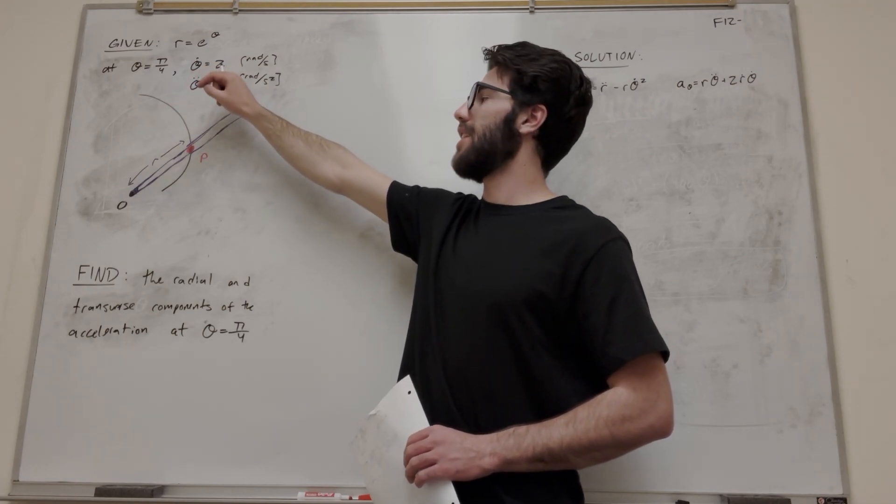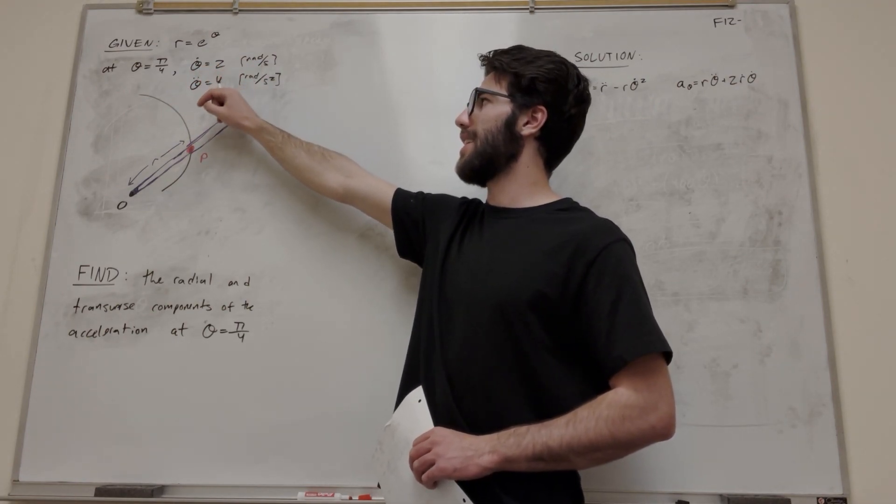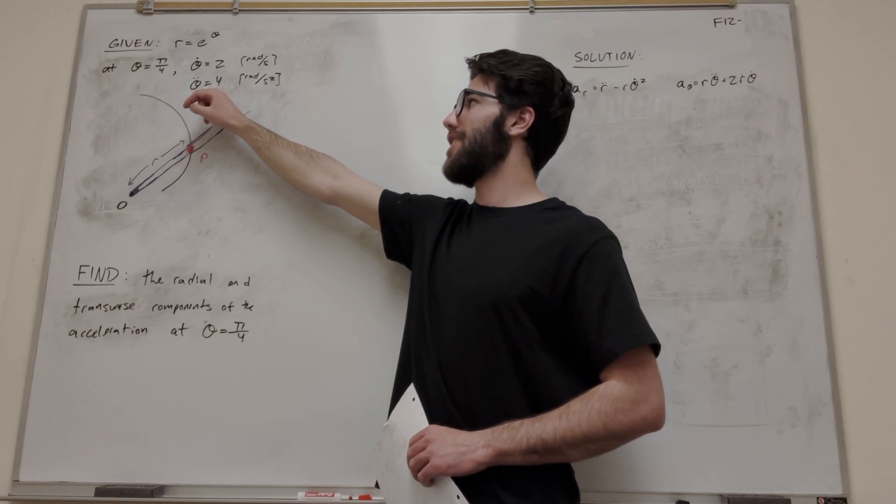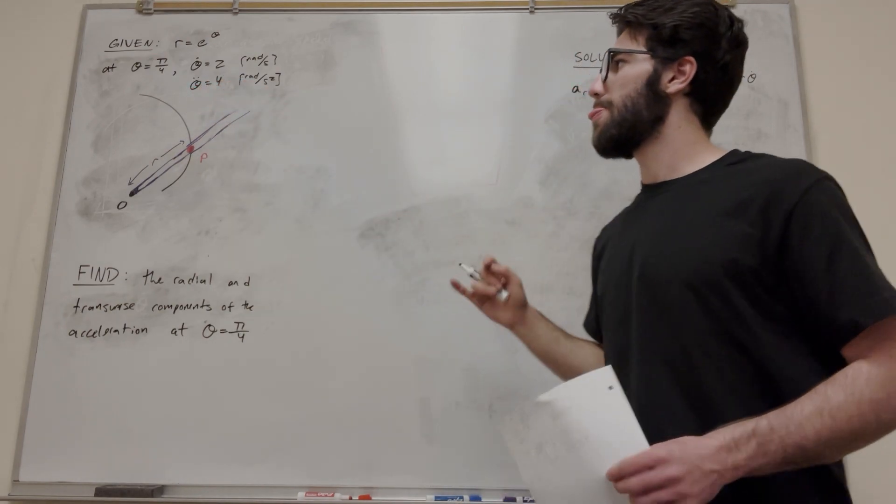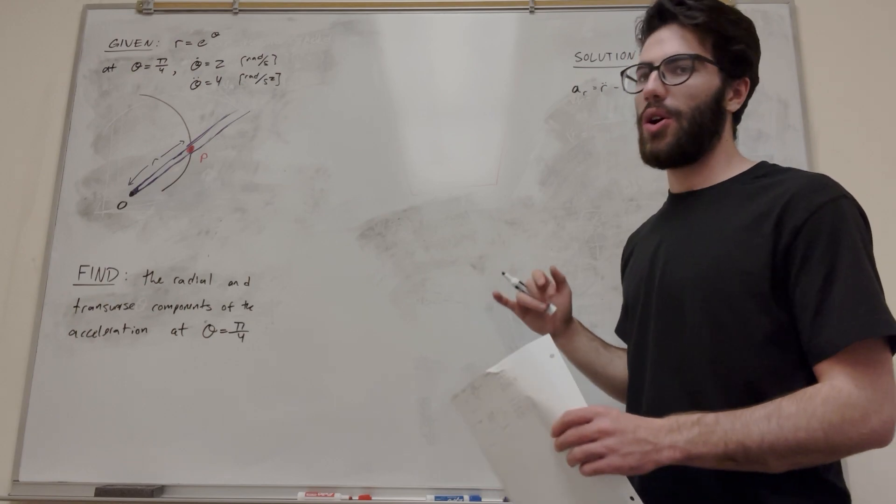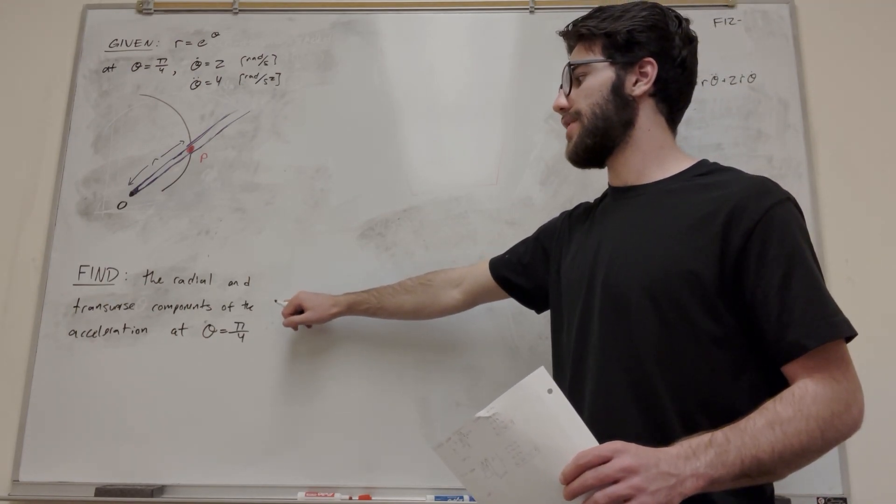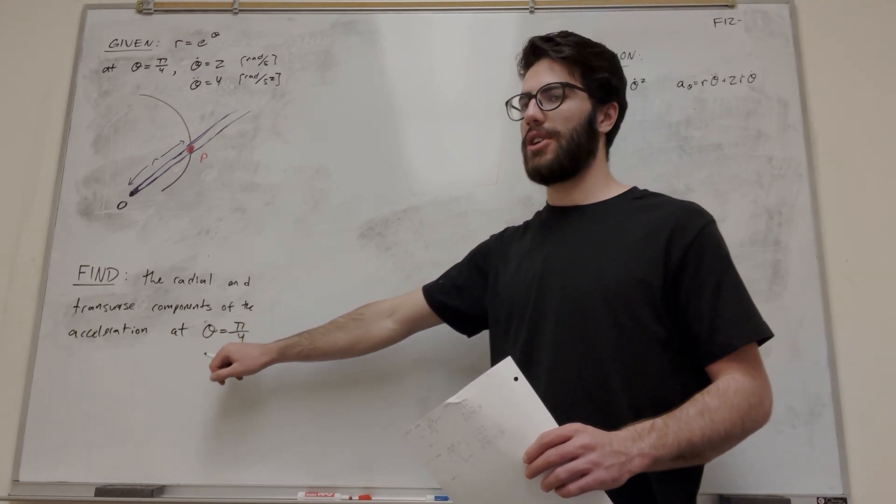...our theta dot, our radial velocity, is 2 radians per second, and our radial acceleration, theta double dot, is equal to 4 radians per second squared. And our goal is to find the radial and transverse components of the acceleration at theta equals pi over 4.